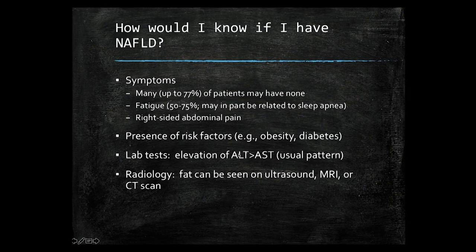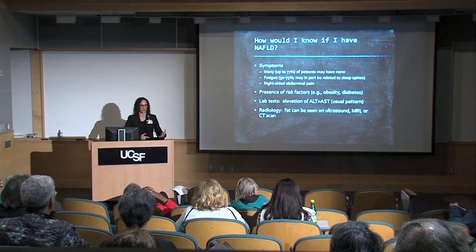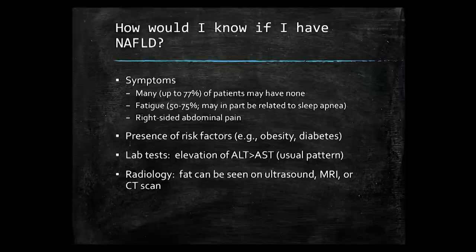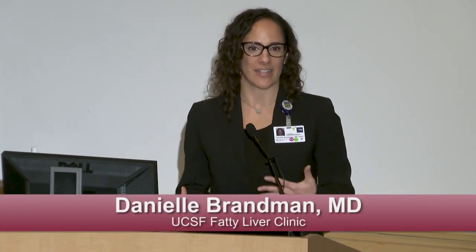As hepatologists — liver specialists — we use a different range for normal liver enzymes than your local lab might. When labs develop their normal values, they derive them from the general population getting their blood drawn. Since about a third of the U.S. population has fatty liver disease, deriving normals from this abnormal population can really skew the normal values to be higher than they should be. A normal ALT for a woman should be less than 20 to 25, and for a man less than 30 to 35. I've seen some local labs say that an ALT of 60 is normal, and that's absolutely not true — for a woman that's close to three times the upper limit of normal.